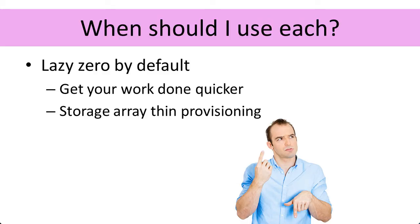The storage array is thin provisioned and it doesn't really want to do that — it wants to allocate backing blocks only when there's data inside the virtual machine. So eager zeroing can be problematic with thin provisioned storage arrays. Not all of them: some can actually detect those zeros being written and they don't back the zeros. But then of course eager zeroing is not helping you — you might as well be lazy zeroed if you're waiting for the zeros to happen later anyway.